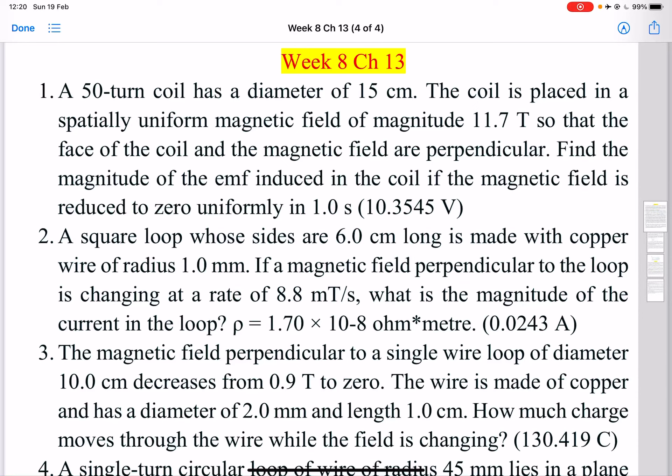Here we have the first problem from Chapter 13. A 50-turn coil has a diameter of 15 cm. The coil is placed in a spatially uniform magnetic field of magnitude 11.7 Tesla so that the face of the coil and magnetic field are perpendicular. Find the magnitude of the EMF induced in the coil if the magnetic field is reduced to zero uniformly in one second.